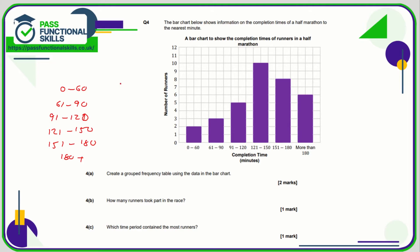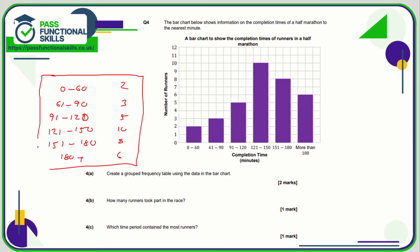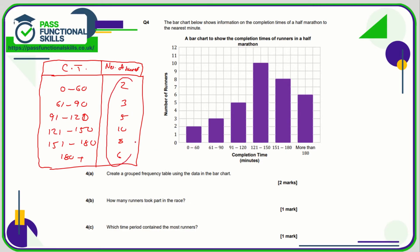Tabulate the frequencies — put them in a box, add lines to make it look neat, and add headings: 'completion time' and 'number of runners.' The total number of runners who took part is all those frequencies added together, which comes to thirty-four. The time period containing the most runners is one hundred and twenty-one to one hundred and fifty minutes, with ten runners — the tallest bar on the chart.